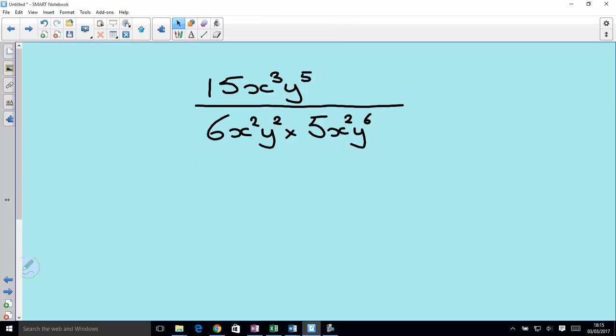Let's do one more with a little bit more in it. 15 x cubed y to the 5 on top is going to remain 15 x cubed y to the 5 on top. And now we'll rewrite that and multiply out the bottom. 6 times 5 is 30.